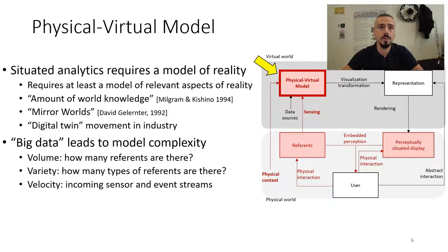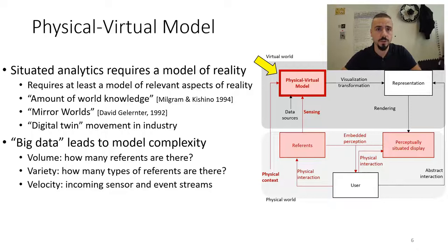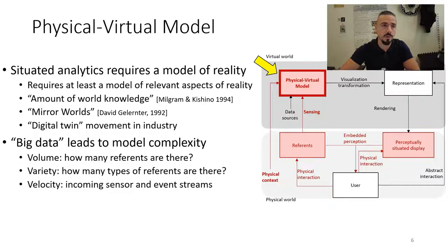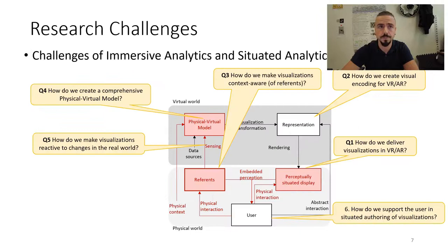The physical-virtual model represents the world where situated analytics takes place. It was also mentioned in works of Milgram and Jalanta, like mirror worlds and amount of world knowledge. There are certain questions to ask, for example, how many referents are in the world, and this is built into the digital twin of the world.